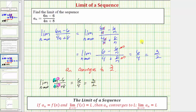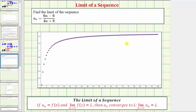Now let's look at the sequence graphically. Here's a graph of the sequence where we have n along the horizontal axis and a sub n along the vertical axis. Notice how it does look like the terms in the sequence are approaching a particular value — they are approaching 1.5, or three halves. So this graph verifies our limit is correct.